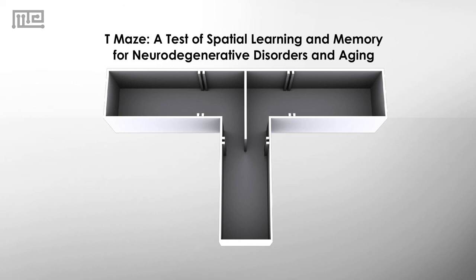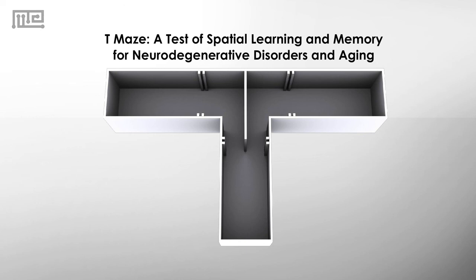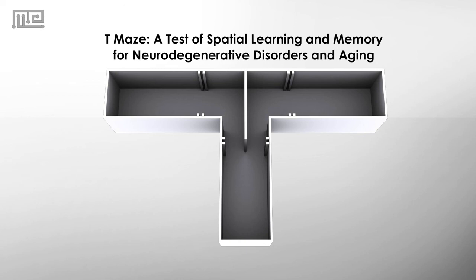By comparing the number of correct and incorrect arm choices between control groups and disease models, the T-Maze is a straightforward and valuable tool to measure neurodegenerative disorders and aging.